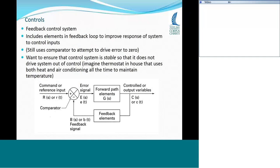This is called a feedback control system because you're feeding back the output to compare it with the input. The diagram shows a more general expression of feedback control: you have the reference input, a comparator that generates the error signal, and then the forward path elements going to the system. At the output stage, you bring back the signal through feedback elements. You want to make sure the controller itself is stable so it doesn't drive the system out of control.